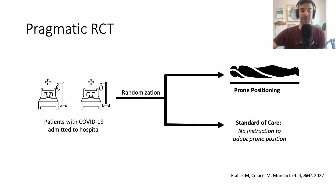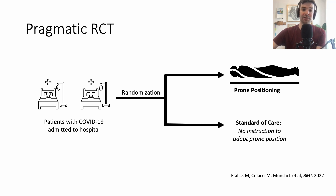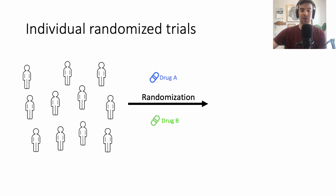Here's an example of a pragmatic trial: one study included patients admitted to hospital with COVID-19, with very few exclusion criteria. Patients were randomized to prone positioning — lying on their stomach — compared to standard of care, lying on their back. Another pragmatic trial led by Dr. Michelle Schulzberg also included hospitalized COVID-19 patients, with no placebo arm, randomizing patients to high-dose versus low-dose heparin.